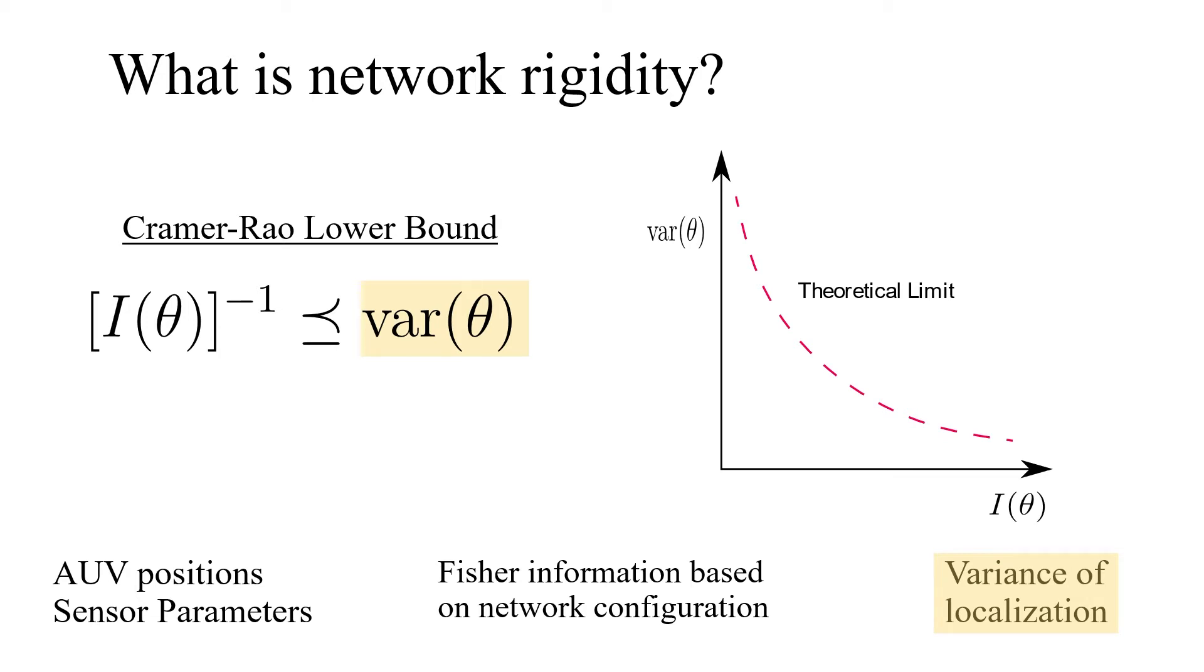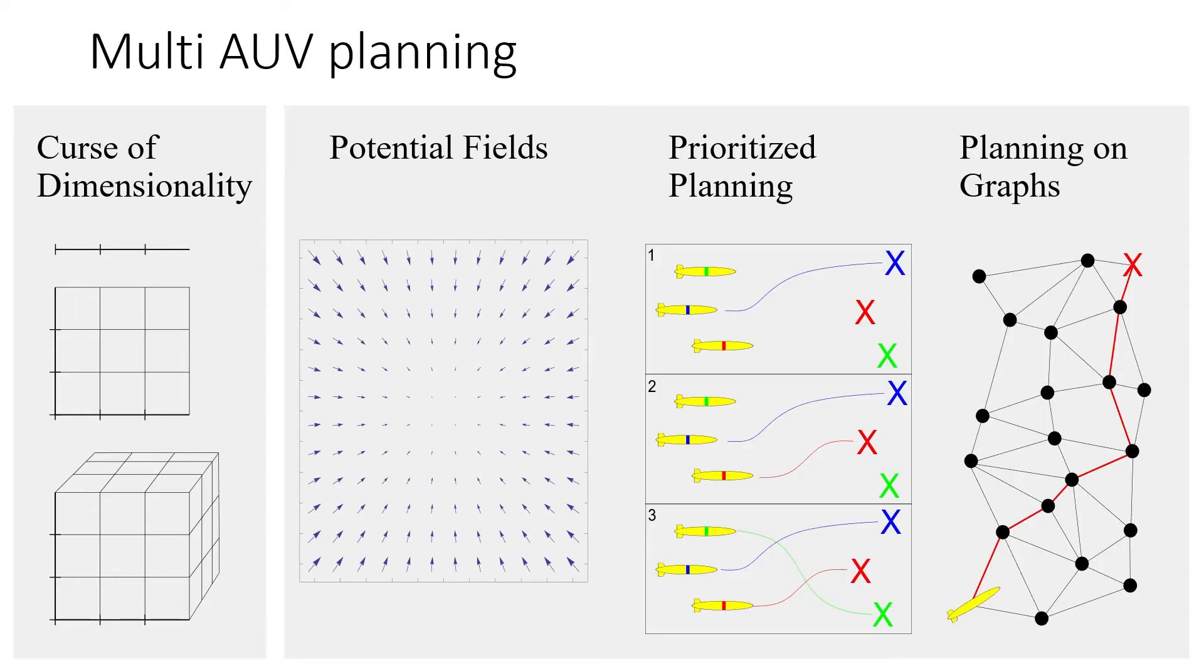Using the Cramer-Rao lower bound to represent localization quality, we define the network rigidity as the value of the least non-trivial eigenvalue of the Fisher information matrix. Due to the structure of this representation, trivial eigenvalues are guaranteed to always be zero. Further discussion of the trivial eigenvalues can be found in our paper and cited works. Using this representation of network rigidity can then begin to perform path planning while enforcing that the network is not allowed to drop below a predetermined minimum rigidity.